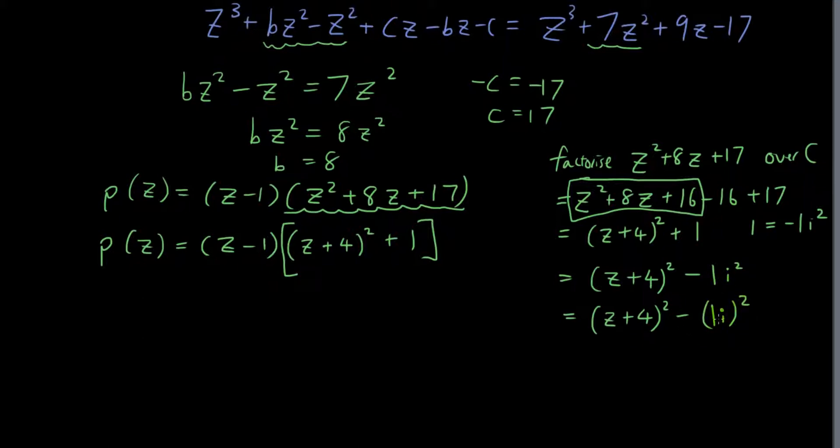Because 1² is just 1. So therefore, if I use the difference of two squares formula, a² - b² = (a + b)(a - b). This then becomes (z + 4 + 1i)(z + 4 - 1i).